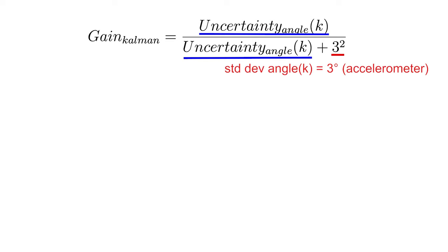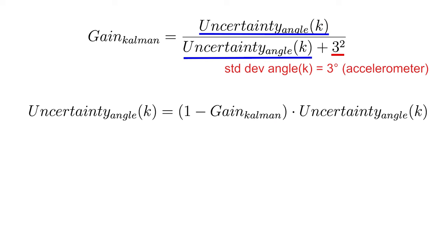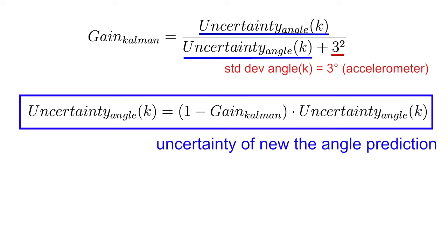We will assume here that the standard deviation of the accelerometer measurement error is equal to 3 degrees. A final equation is necessary to update the uncertainty on the new angle prediction, once again using the Kalman gain.